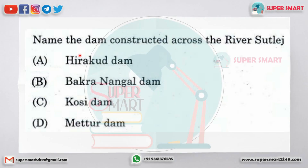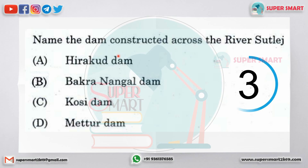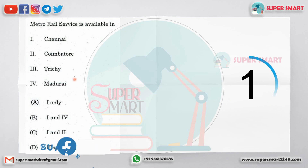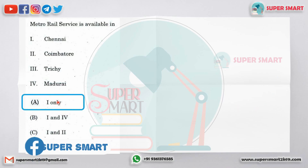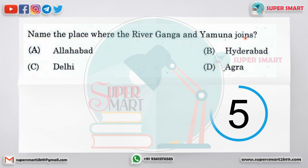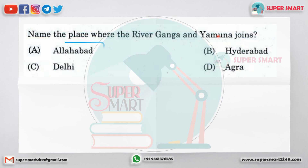The name of the dam constructed across the river Sutlej — the answer is Bhakra Dam. Metro light service is available in Chennai. Name the place where the river Ganga and Yamuna join — the answer is Allahabad.